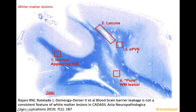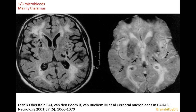The white matter lesions in CADASIL are caused by the problems with the blood-brain barrier and the pericytes. You can also see enlarged perivascular spaces and lacunes, as summarized on this histological specimen. Because of the microangiopathy, you might expect microbleeds — and indeed, one-third of patients with CADASIL do have microbleeds, mainly in the thalamus. If you have elderly patients with microbleeds in the thalamus and basal ganglia and extensive white matter abnormalities, at the top of your differential diagnosis for CADASIL is chronic hypertensive encephalopathy, which we will discuss next.